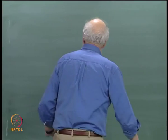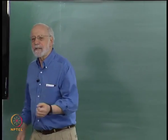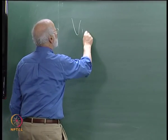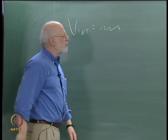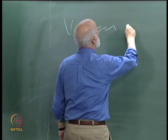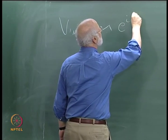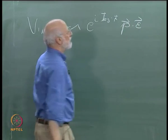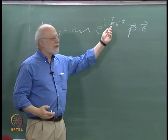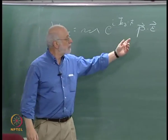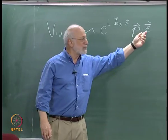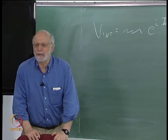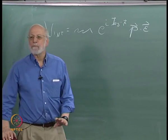To begin with, light and matter — the coupling goes something like this. The interaction Hamiltonian is a bunch of constants, and then e to the i k_ν dot r, times p dot epsilon. Here, k_ν is the wave number of the light, p is the momentum of the electron, and epsilon is the polarization of the light. This is hard, and so we simplify things.